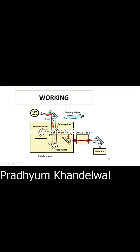Now, how it works: there is a helium-neon laser used as the infrared source. When the laser passes through, it gets reflected through a mirror and goes parallel to the light source coming from the other direction. Through the beam splitter, the laser and the light source are split into two beams, as you can see in the diagram. When the laser goes and comes back from the movable mirror and the fixed mirror, it gets recombined.